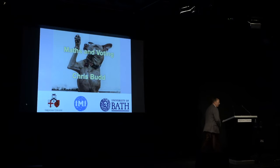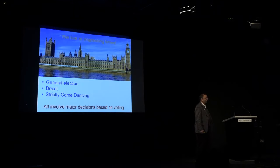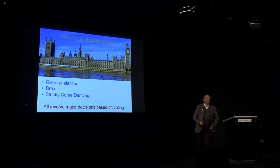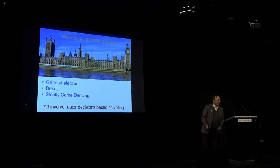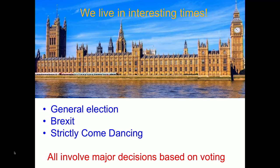When I planned this lecture a year ago, I had no idea how topical it would be. I can assure you it is pure coincidence, but it's a very interesting coincidence that today I'm going to talk about mathematics and voting. Voting is important for the general election, for Brexit, and most importantly of all, it comes into Strictly Come Dancing. I will touch on all three in this lecture, plus other areas as well.